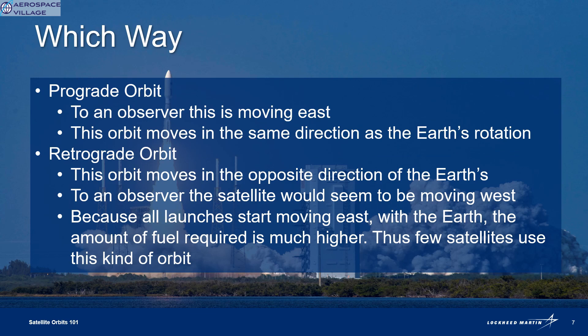There are also terms for the direction a satellite is moving in around the Earth. Prograde orbits move in the same direction as the Earth's rotation, and to us here below, if we were to see a satellite in prograde, it would appear as if the satellite was moving to the east. Retrograde means the opposite — a satellite in this type of orbit is moving against the rotation of the Earth, and it would appear to us to be moving to the west.